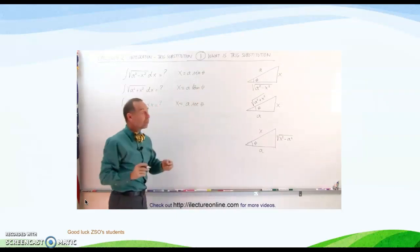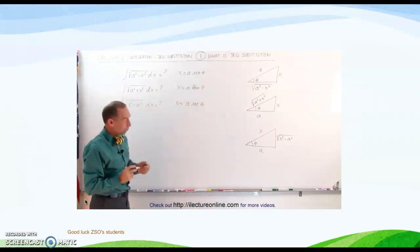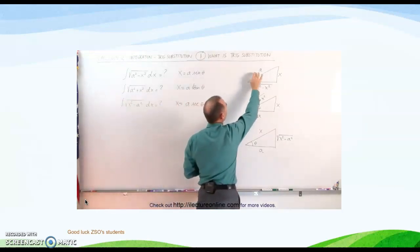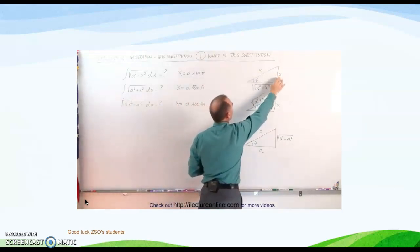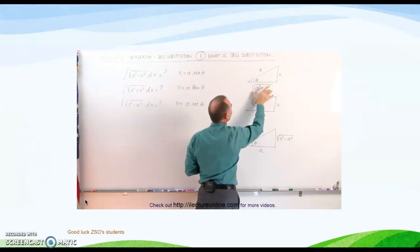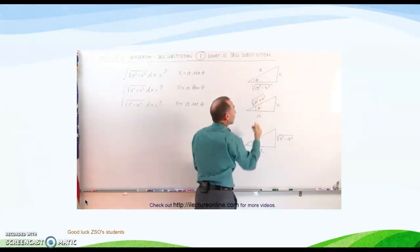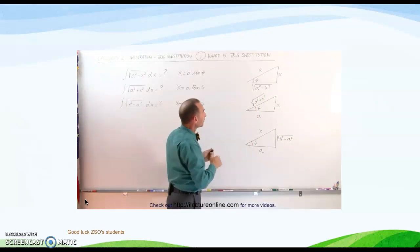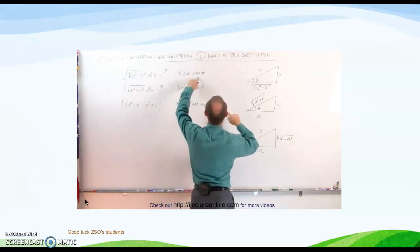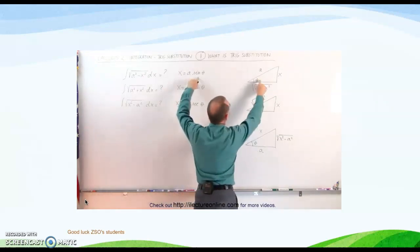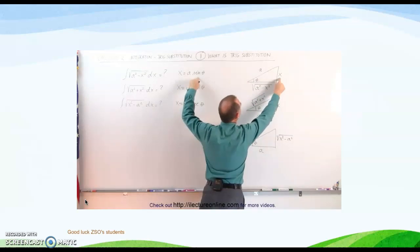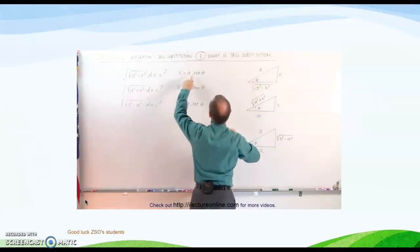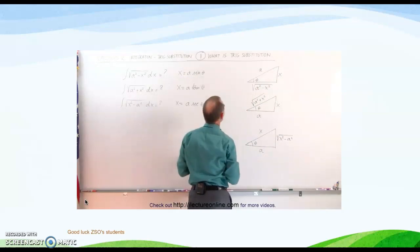Why do we do that? That is what these triangles are for. On the first triangle, if we let a be the hypotenuse and x be the opposite side, then the adjacent side becomes the square root of a squared minus x squared from the Pythagorean theorem. Notice that the sine of theta is defined as the opposite side over the hypotenuse, which is x over a. Therefore, x divided by a equals sine theta, so x equals a sine theta.